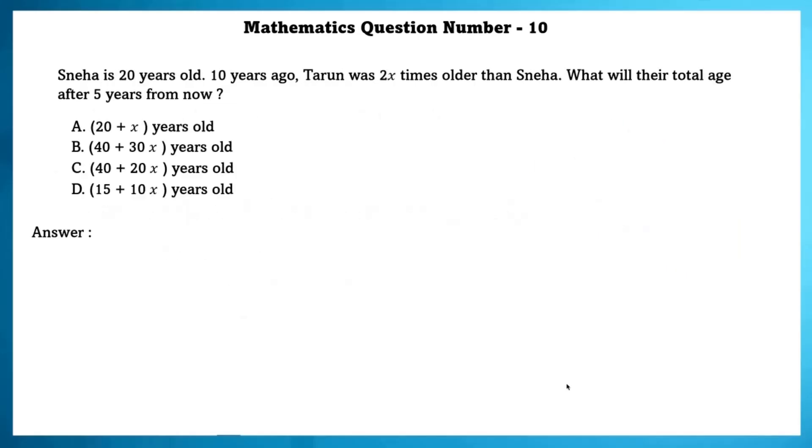Mathematics question number 10. Sneha is 20 years old now. 10 years ago Tarun was 2x times older than Neha. What will their total age be after 5 years from now?